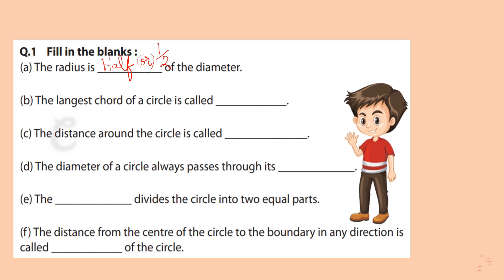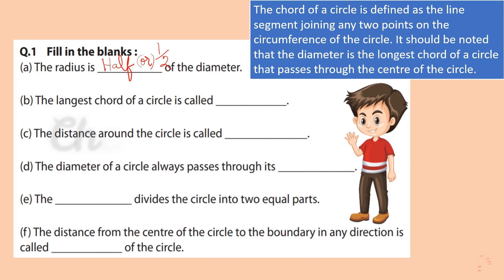Second question: The longest curve of a circle is called dash. The curve of a circle is defined as the line segment joining any two points on the circumference of the circle. It should be noted that the diameter is the longest curve of the circle that passes through the center of the circle. So the longest curve of the circle is called diameter. The distance around the circle is called circumference.